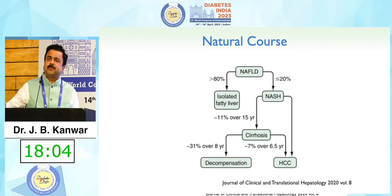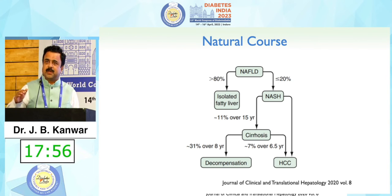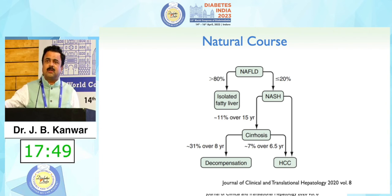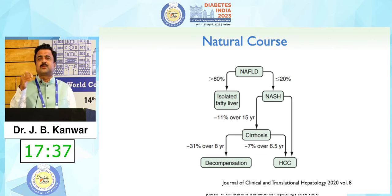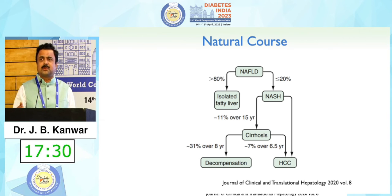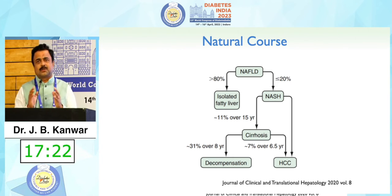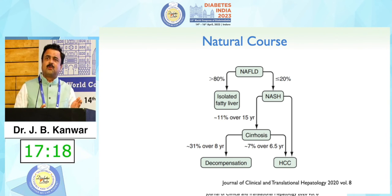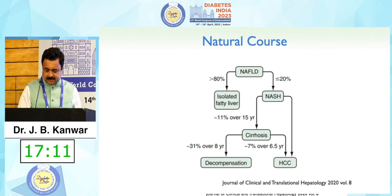If so many people have NAFLD, how many of them would progress to NASH or end-stage liver disease? About 80% will remain with steatosis throughout their life and will not progress. Only less than 20% will progress to NASH, about 10% will progress to cirrhosis, and of those cirrhotic patients, 7% will progress to hepatocellular failure. So we need to identify investigation or scoring modalities to identify who will progress from fatty liver to NASH or cirrhosis.